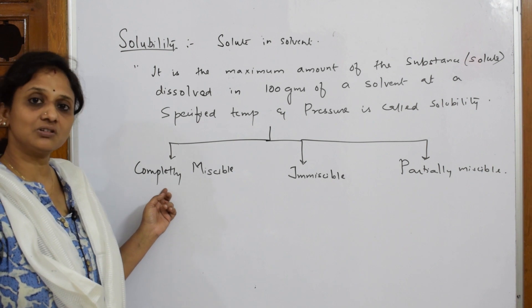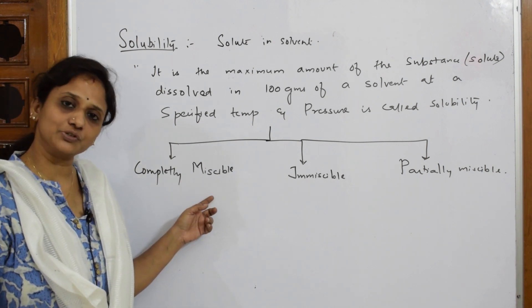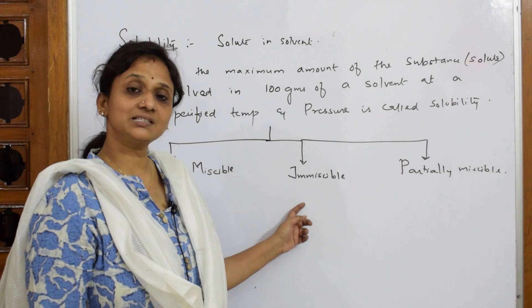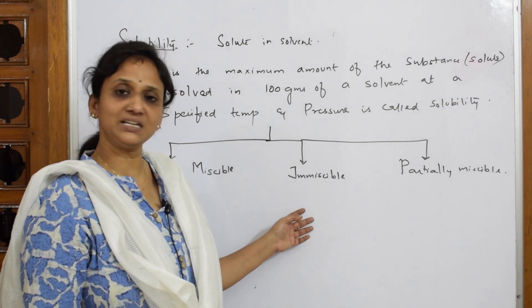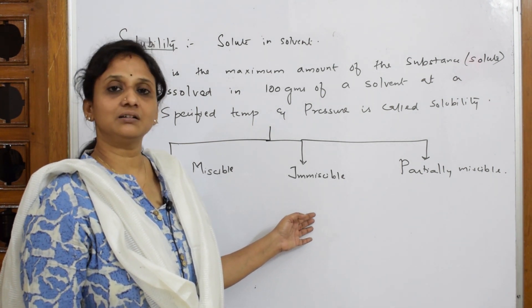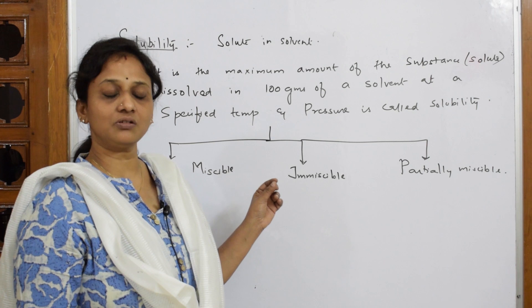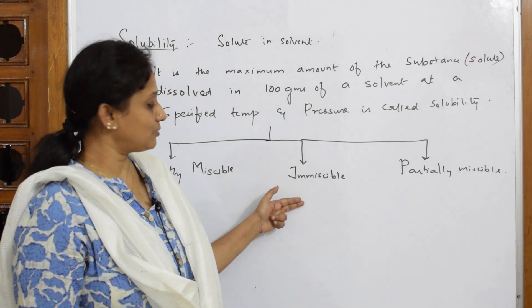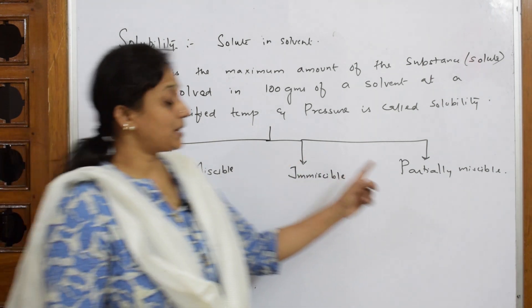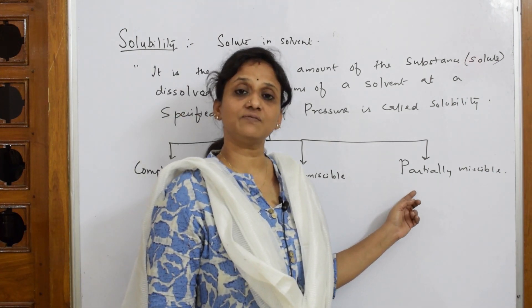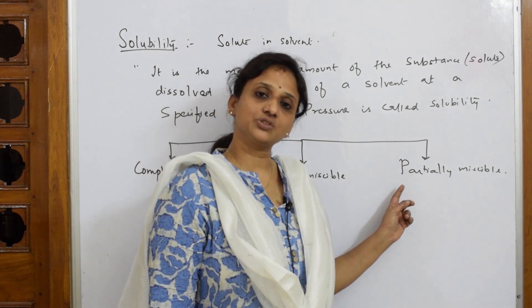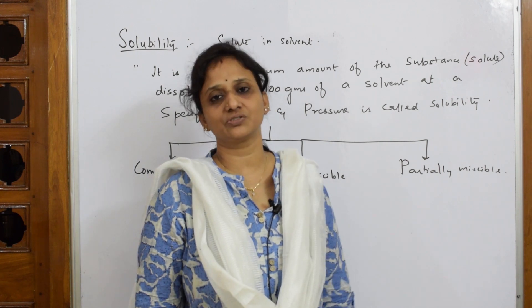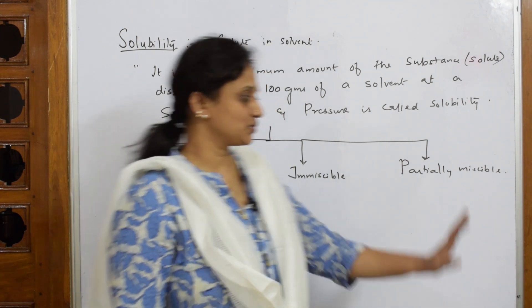Completely miscible solutions are those where a solute dissolves in the solvent at all proportions. Immiscible means the solute will not dissolve in the solvent at all — they form two layers. Partially miscible solutions are those in which the solute dissolves in the solvent only under limited conditions.